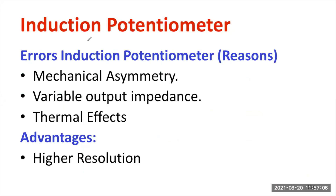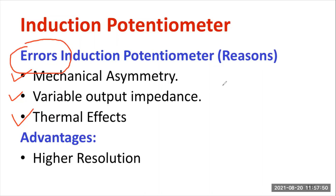Let us list out a few drawbacks of the induction potentiometer. There are certain errors which occur. The first is mechanical asymmetry — as the structure of the rotor connected to the shaft shows some mechanical asymmetry. Variable output impedance is also a reason for error, as impedance variation causes changes in the output voltage and affects accuracy. Thermal effect also matters a lot for the occurrence of errors in the induction potentiometer.